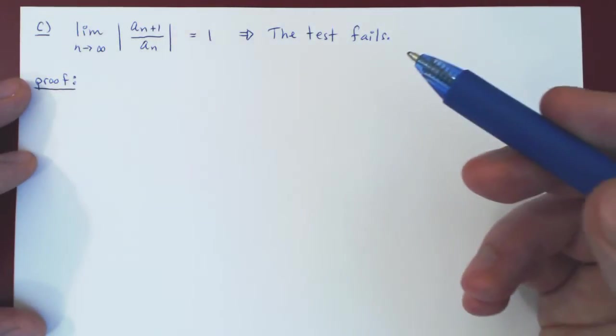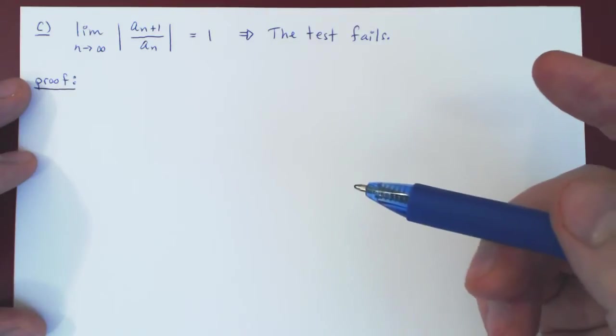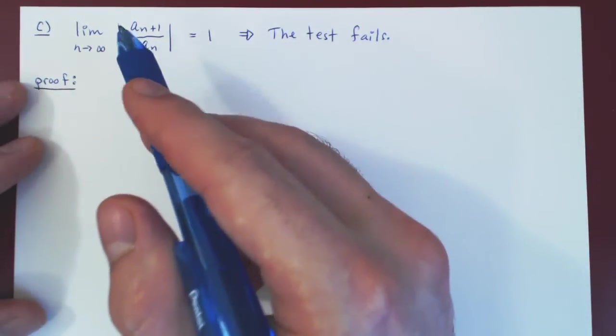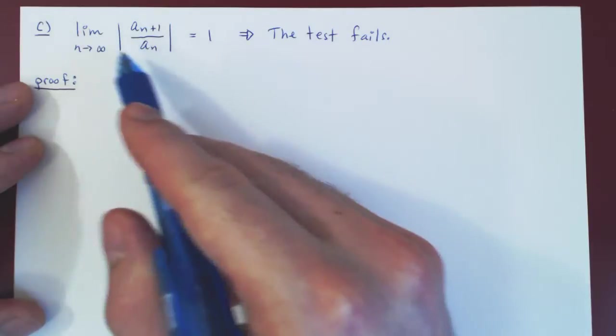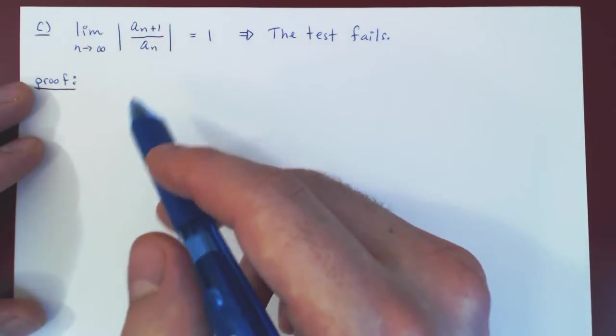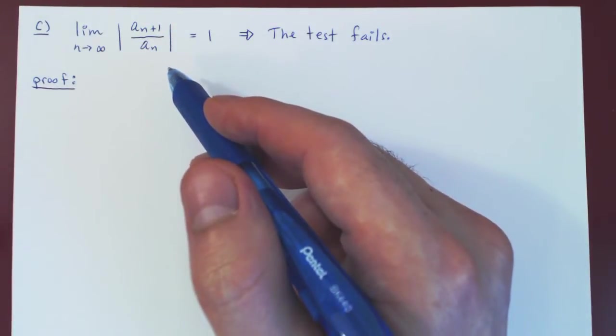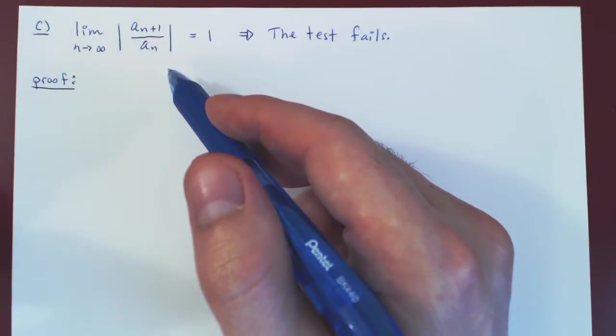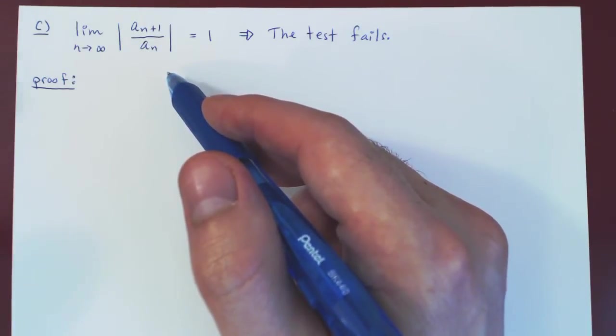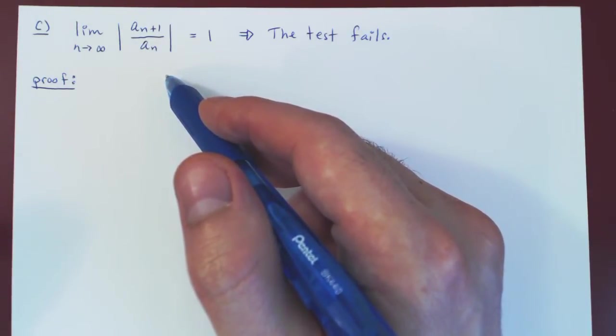And to prove this, we'll simply give two examples of series where in both cases the limit is 1. In one case the series converges, in the other the series diverges, and the two series we'll choose are the familiar P-series where P equals 1 and P equals 2.